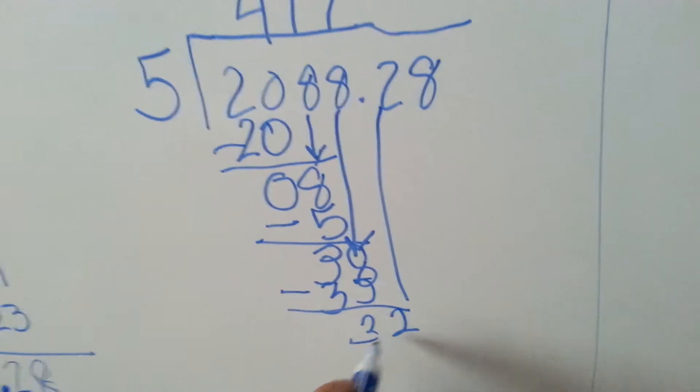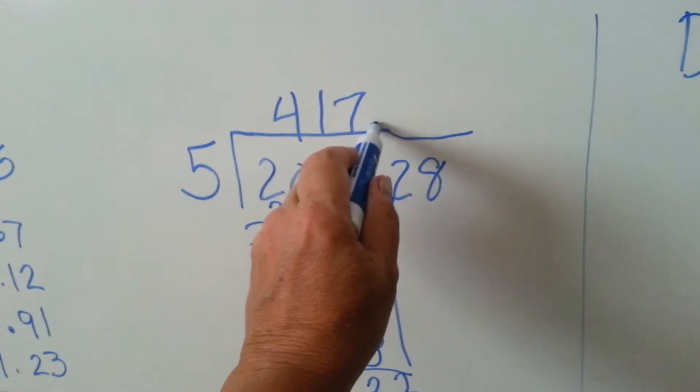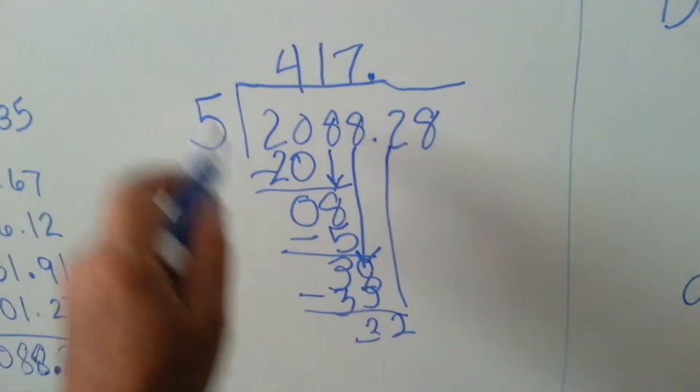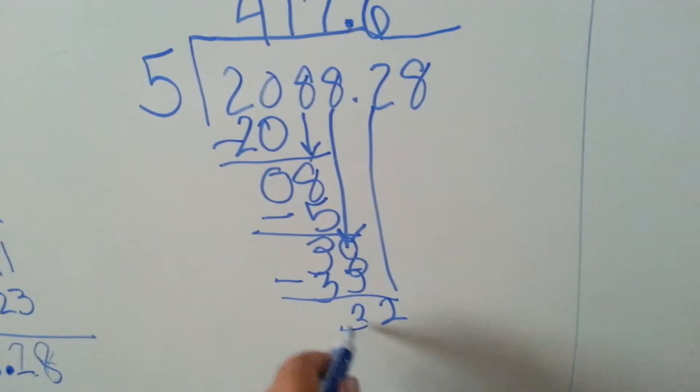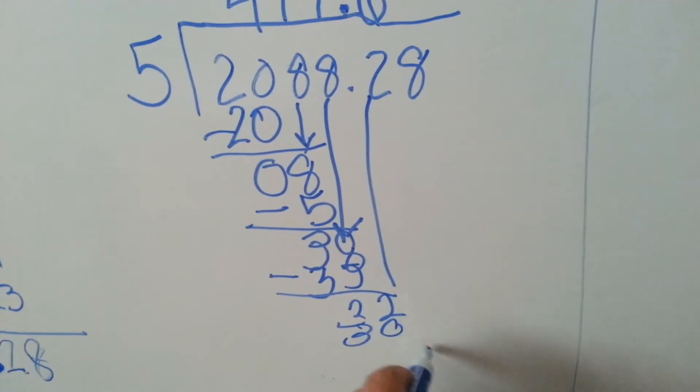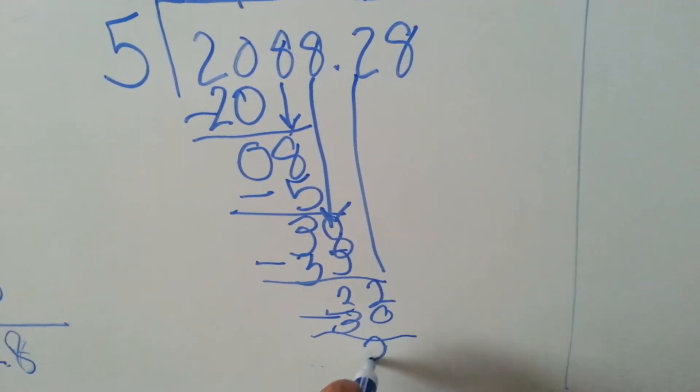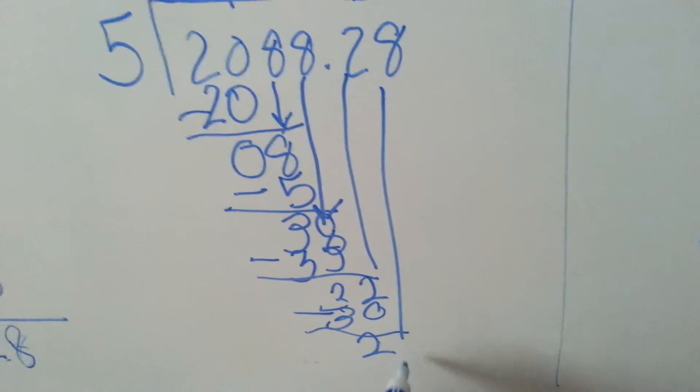Can 5 go into 32? Yes. Let's put our decimal point above the other decimal point. 5 times 6 is 30, I'm sorry, 5 times 6 is 30, we're going to subtract, and we get 2 left over. And now it's this 8's turn to come down.